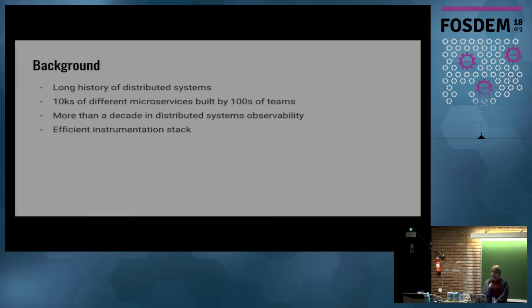We have thousands of different microservices built and maintained by hundreds of different teams. Being able to observe our systems is a fundamental reason why Google is reliable, fast, and user-friendly.